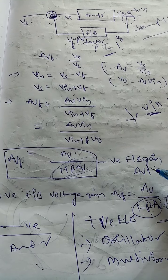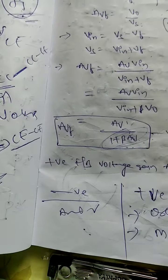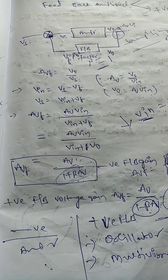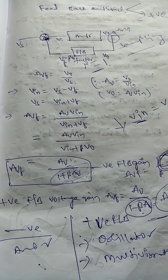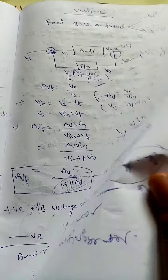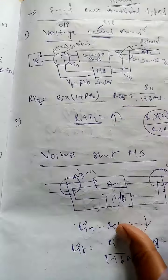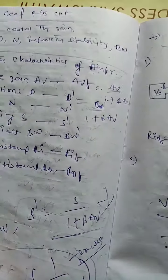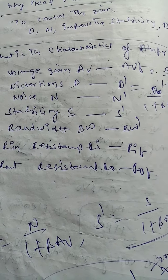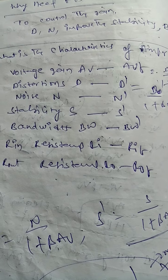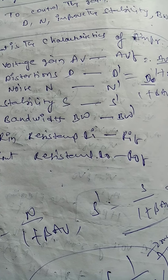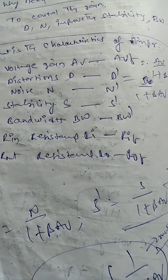Substituting these values into the closed-loop gain expression, and noting that the feedback voltage V_F equals beta times V_out, we arrive at the closed-loop voltage gain formula: AVF equals AV divided by one plus beta times AV. This means the feedback voltage gain decreases when negative feedback is applied.